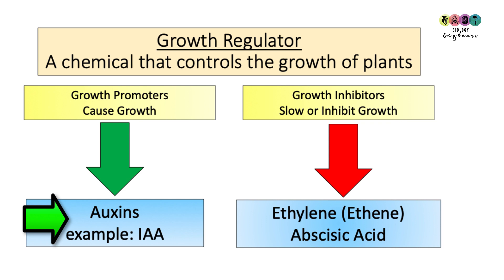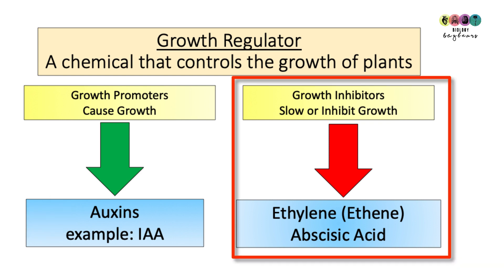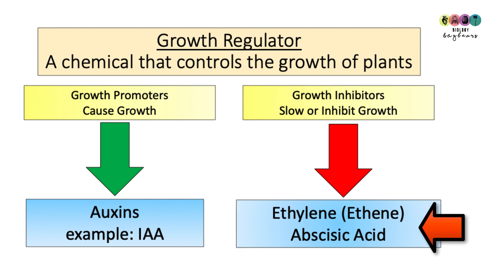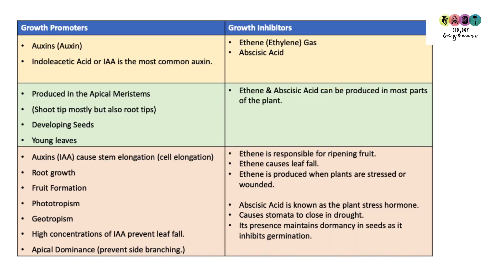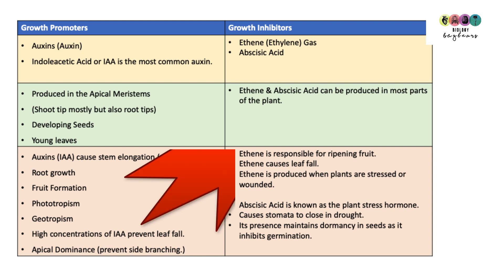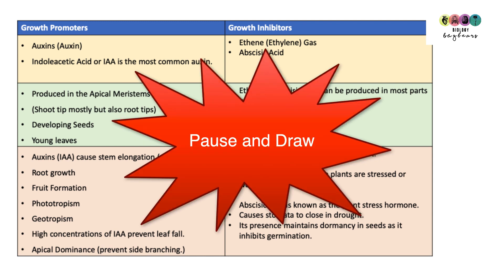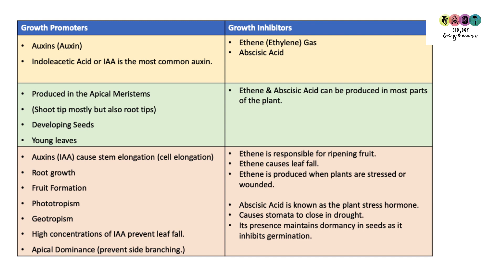There are two growth inhibitors on our course: ethylene (otherwise referred to as ethene) and abscisic acid. The best way to learn these growth regulators is to draw a table and write the key features in. You can pause the video and take the table down, as it gathers all the information together.